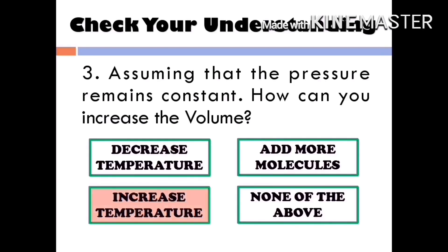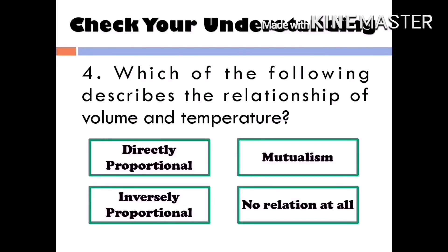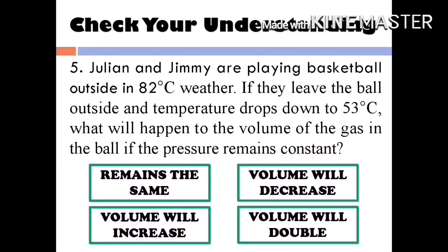Question three: Assuming pressure remains constant, how can you increase the volume? The answer is increase the temperature. Question four: Which of the following describes the relationship between volume and temperature? The answer is directly proportional. Question five: Julian and Jimmy are playing basketball in 82°C weather. If the temperature drops to 53°C, what happens to the volume of gas in the ball? The answer is the volume will decrease. Congratulations!